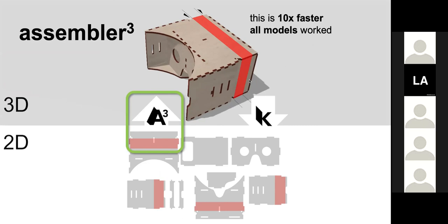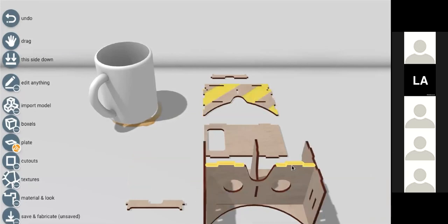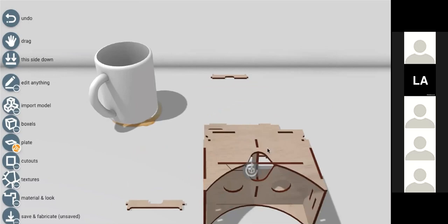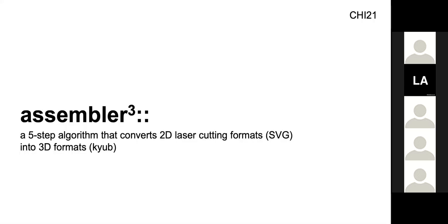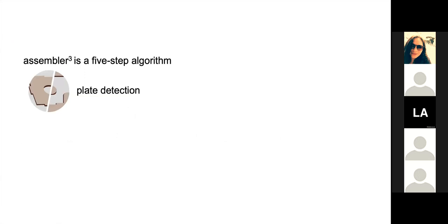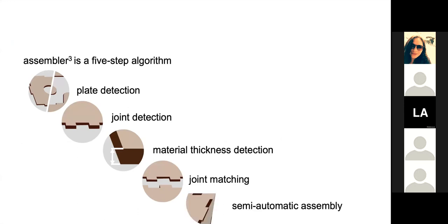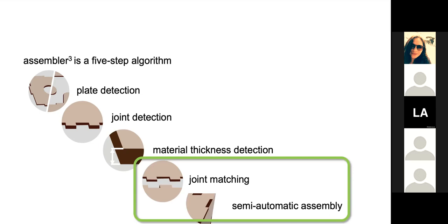Let's dive into that algorithm. The software looks like: you load the 2D cutting plans into your 3D editor and a user can just click together the 3D model and then make modifications. AssemblerCube is a five-step algorithm that converts the 2D cutting plans in SVG format into 3D formats like Cube. The algorithm first detects the individual plates, then tries to identify joints in the model, derives the material thickness from that information, matches up the joints, and then the last step — users semi-automatically assemble the 3D model.